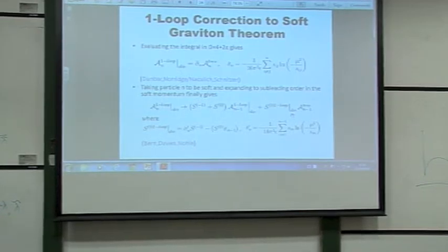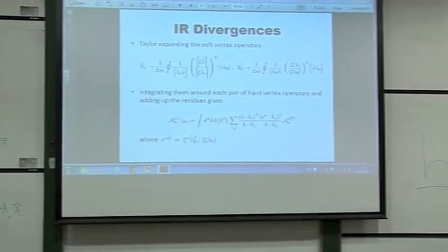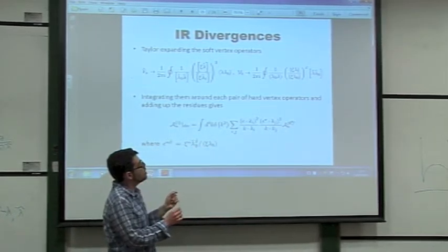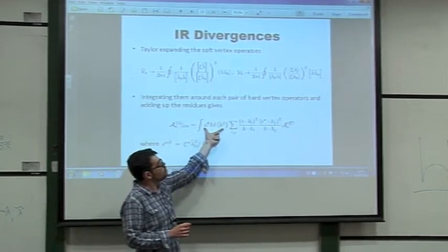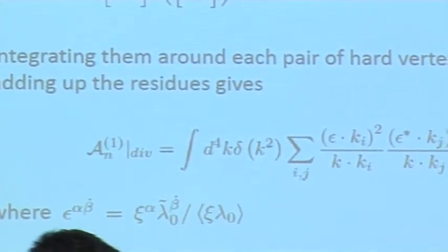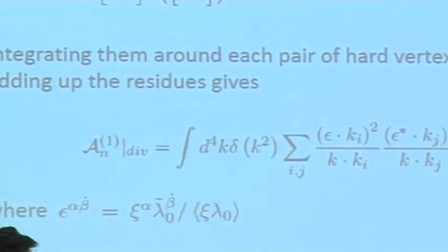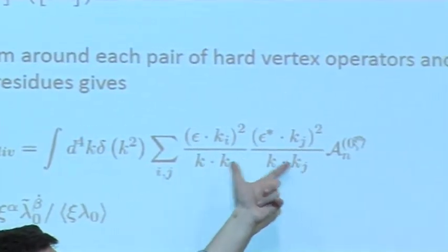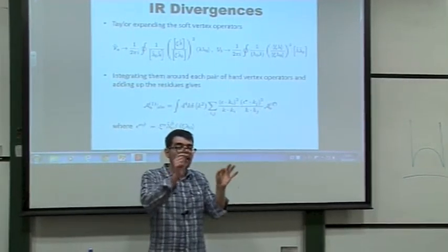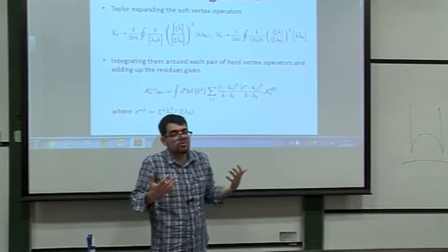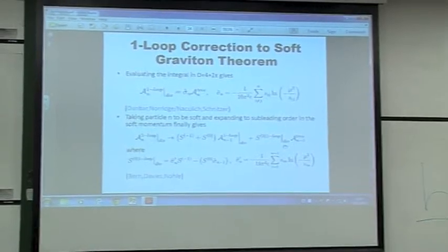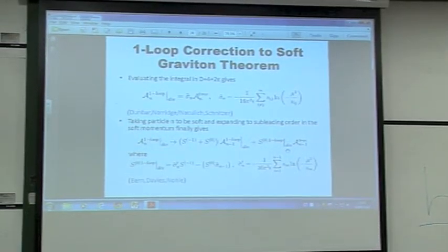From the ambitwister point of view, there is a nice geometric interpretation for where these IR divergences are coming from. The on-shell momentum comes from taking a non-separating degeneration of the worldsheet, and the products of soft factors come from integrating each end of the tube around each pair of hard vertex operators on the worldsheet. It's a very simple and natural geometric description which gives you the expected IR divergences.